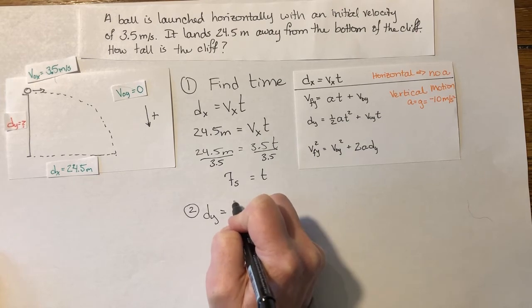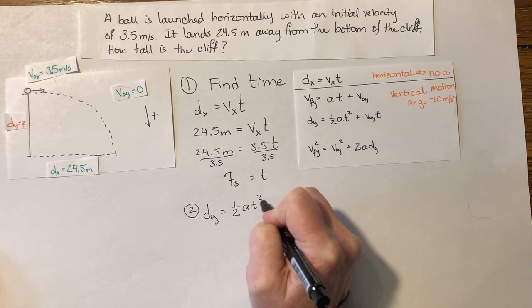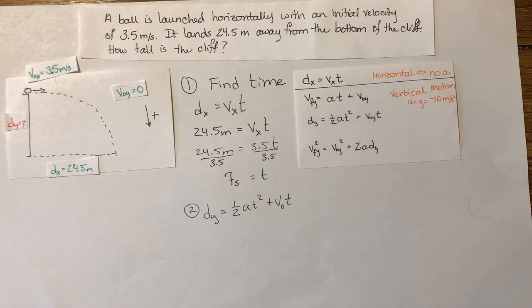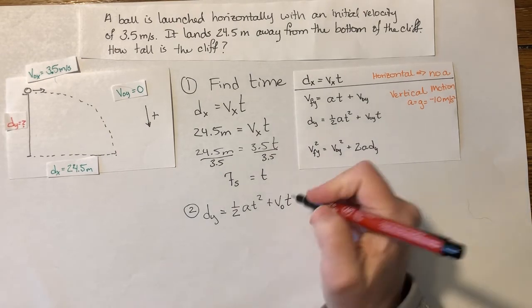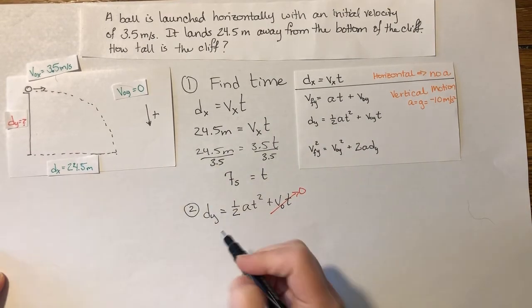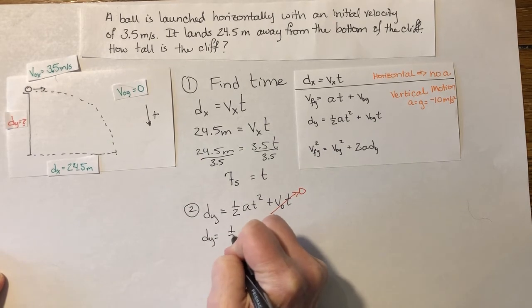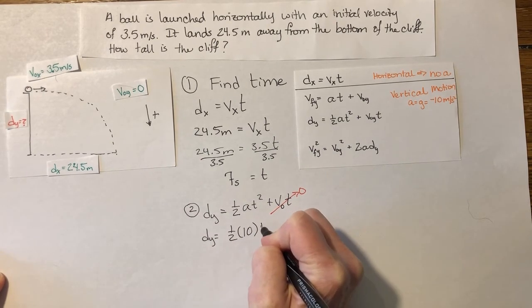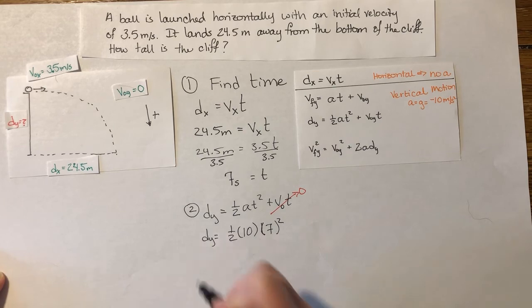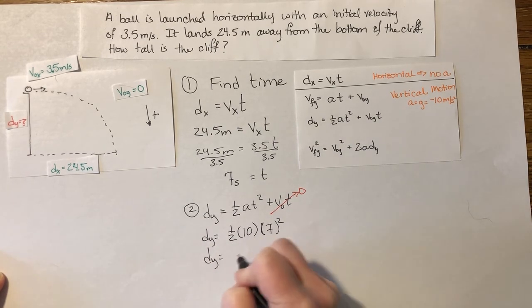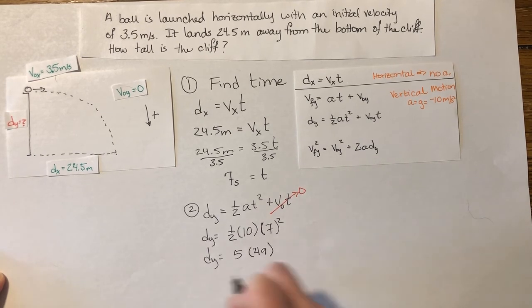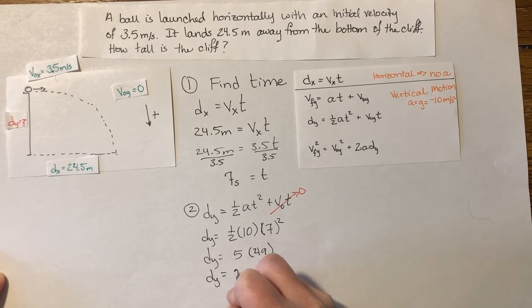So dy equals one half at squared plus v₀t. Now remember, because v₀ in the y direction is zero, I can take and get rid of that whole amount because that's all equal to zero. So dy, which is my unknown, equals one half times 10 times t squared. Since t is 7 seconds, I'm going to take 7 and square that. dy equals one half times 10 is 5. 7 times 7 is 49. dy equals 245 meters.